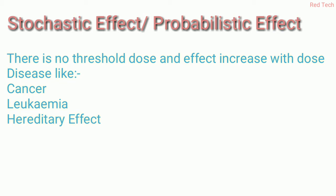The stochastic effect, also called the probabilistic effect, has no threshold dose. The effect increases with dose. Diseases that may occur include cancer, leukemia, and hereditary effects. The dose impacts the cells and may create cancer; leukemia is considered a part of cancer.